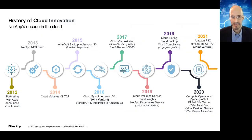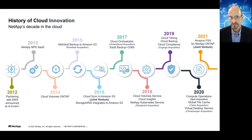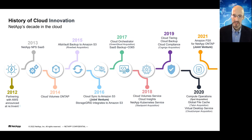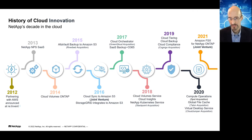Talking about NetApp and AWS, we've had a really strong partnership for over 10 years, starting back in 2011 or 2012 when we created our first version of Cloud Volumes ONTAP. That has grown through a variety of other services — things around backup and recovery, Cloud Sync in 2016, new cloud volume services in 2018, Cloud Insights for optimization and cost savings, cloud tiering, and the latest service announced about a year ago: Amazon FSX for NetApp ONTAP.